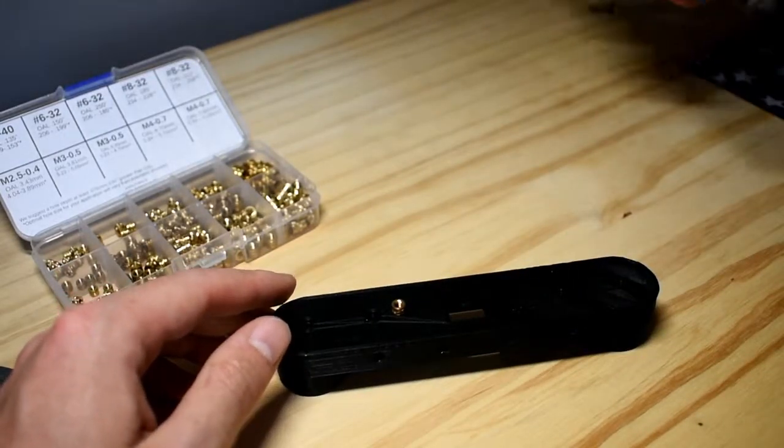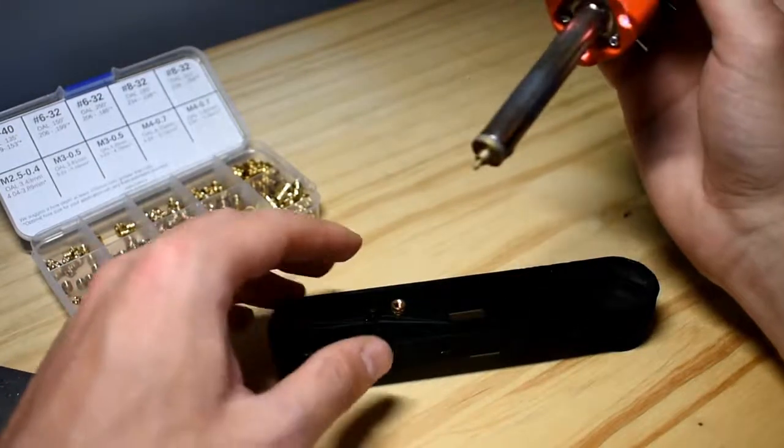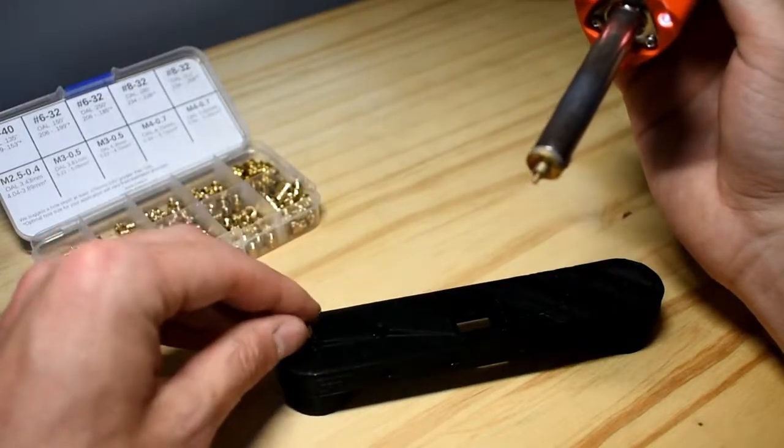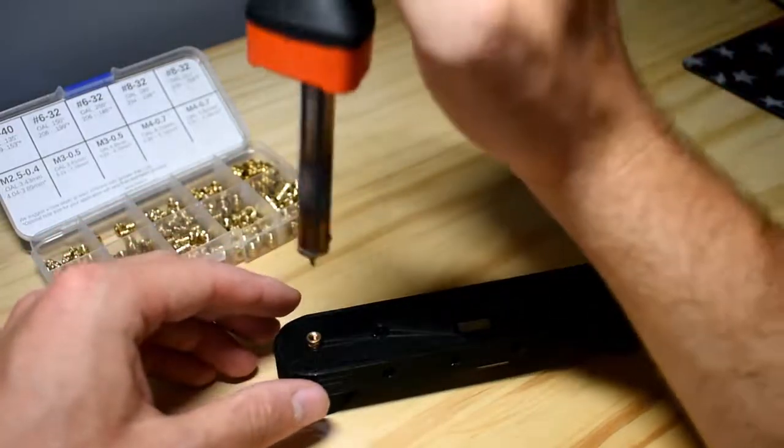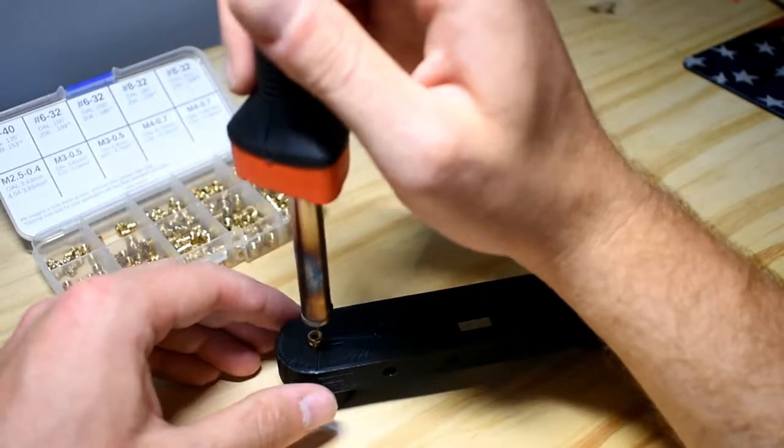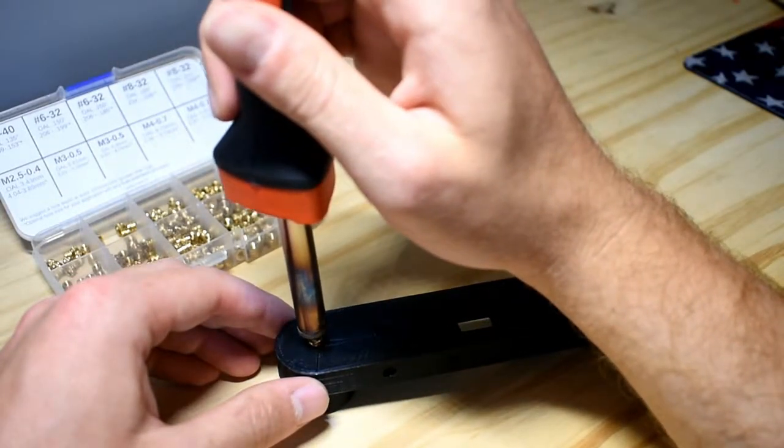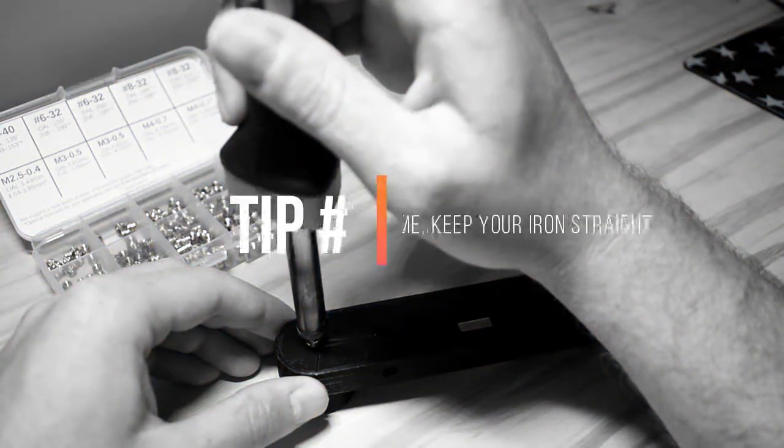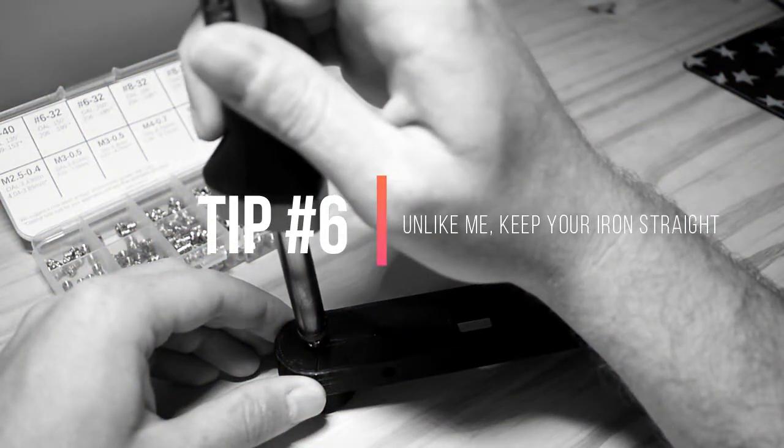Once your soldering iron is done heating up, go ahead and place the insert on top of the hole that you made in your part. Insert the soldering iron into the insert, give it a minute to heat up and slowly press it into the hole.